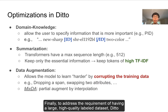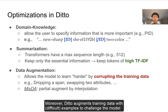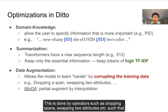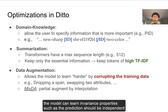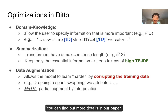Finally, to address the requirement of having a large high-quality labeled dataset, DITTO applies data augmentation to generate additional training examples from existing ones. DITTO augments training data with difficult examples to challenge the model to learn harder. This is done by operators such as dropping spans and swapping attributes, so that the model can learn invariance properties — for example, that predictions should be independent of column order. We also apply a data augmentation technique called MixDA which generates augmented sequences by interpolation. More details are available in our paper.